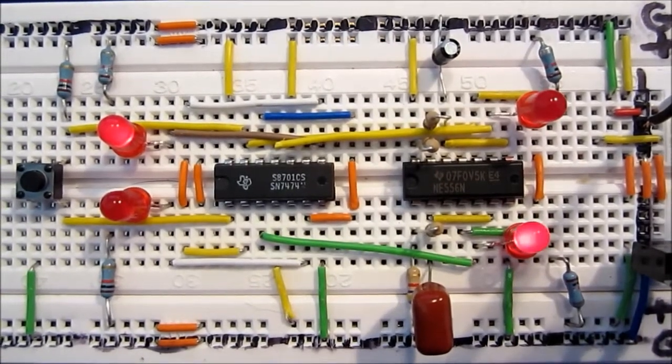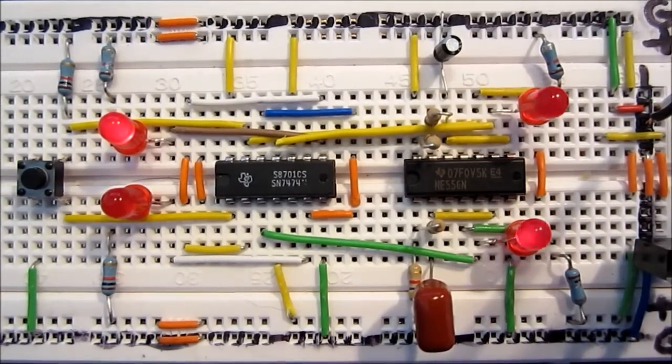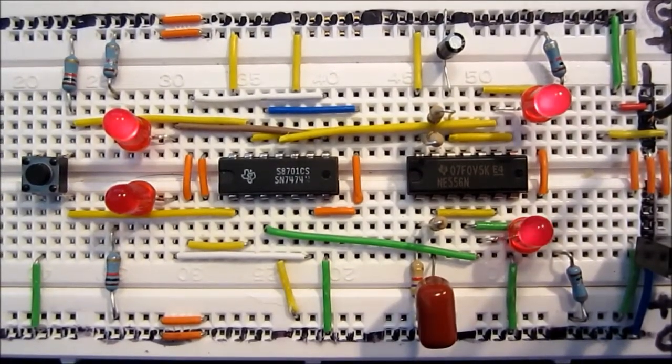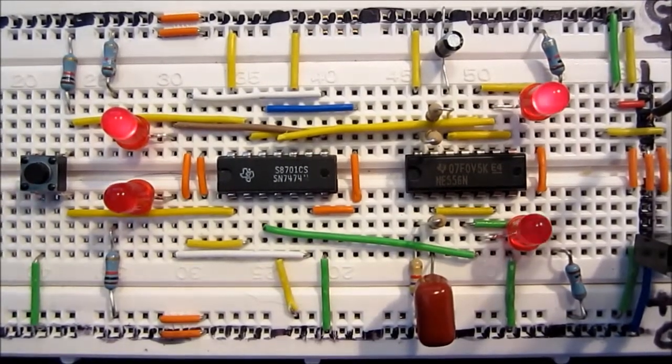So here we have two clocks, one is running at 3.1 Hertz and the other is about 15 Hertz. So now each one of the state machines has got its own clock and this allows them not to be completely synchronized.